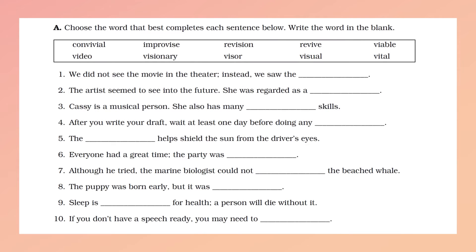So the first exercise: we have to use the words to complete each sentence. Number one: 'We did not see the movie in the theater. Instead, we saw the...' — something having to do with 'see,' the verb 'to see.' You see here the keyword: 'video.' Remember the root we studied, vid — it means 'see.'